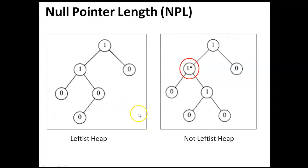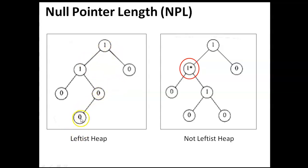There are two heaps given here — this is the leftist heap and this is not the leftist heap. The NPL of a leaf node or a node with 1 child is 0. So the 0 and 1 shown are the NPL values of each node. The leaf nodes have NPL value 0, and the node with 1 child also has NPL value 0.